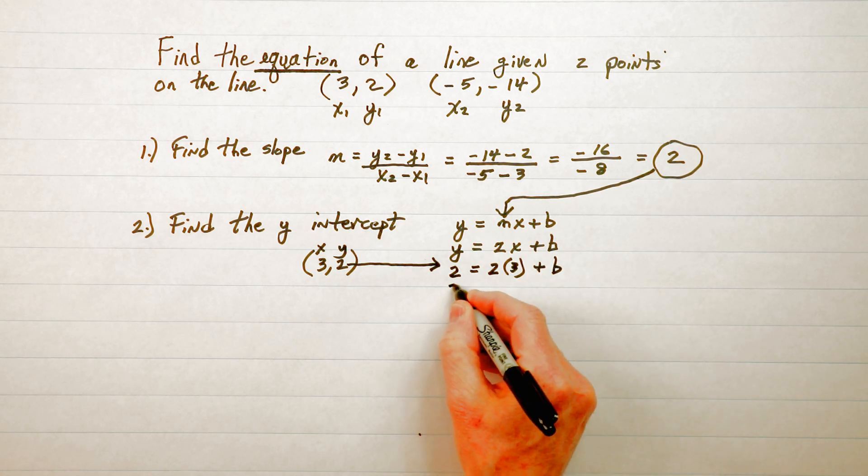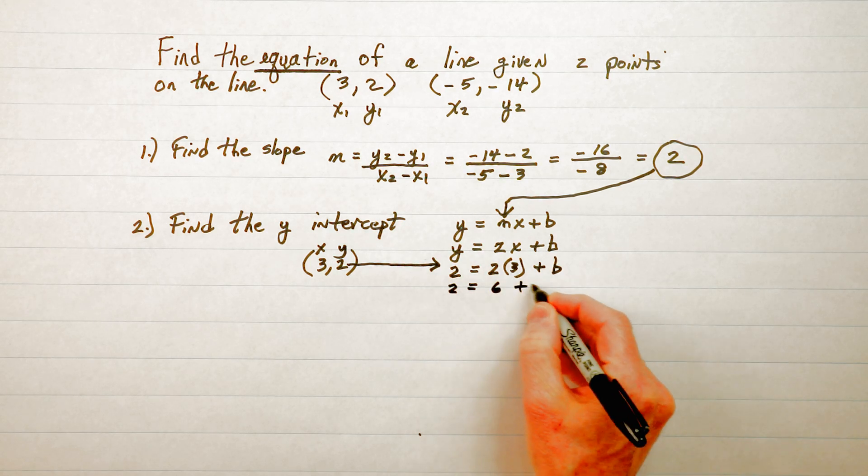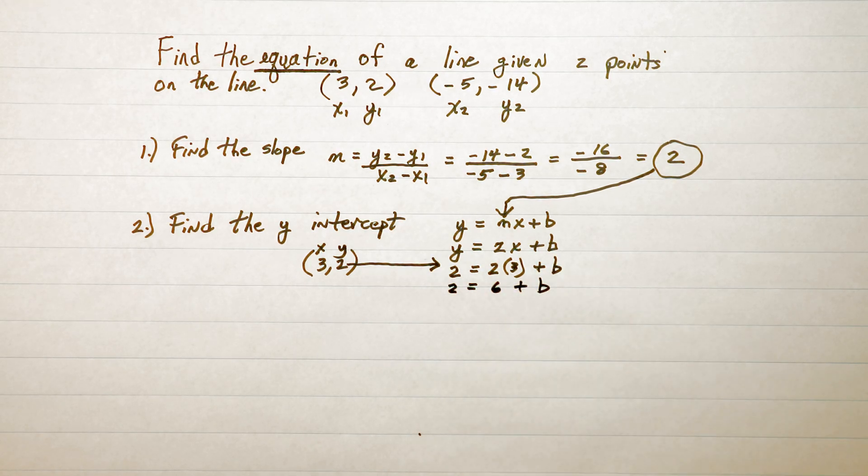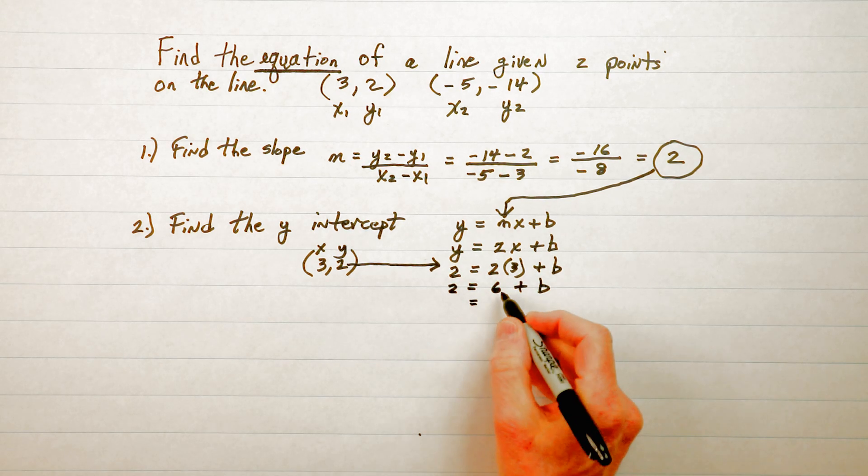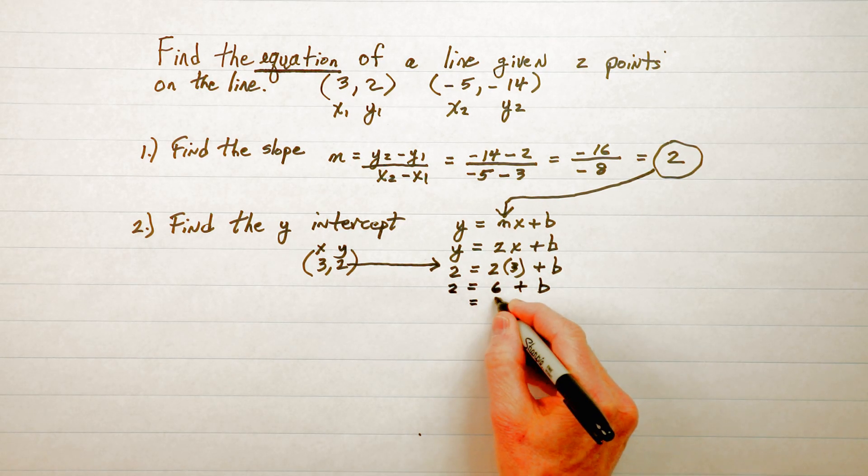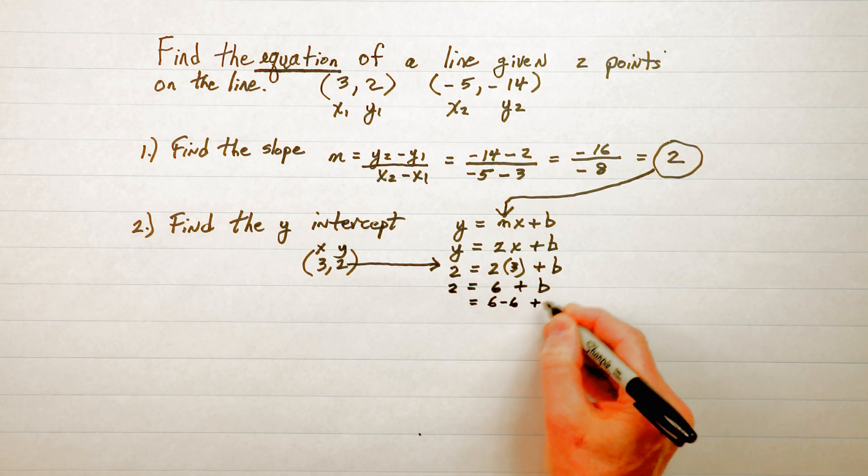And just continue working this out. 2 times 3 is 6 plus b. And when you are solving a simple equation we usually do this by opposite operation. This is a positive 6 so I'm going to take away 6 plus b.